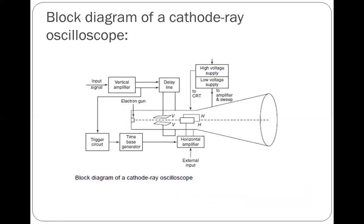CRT generates the electron beam, accelerates the beam to a high velocity, deflects the beam to create the image, and contains a phosphor screen where the electron beam eventually becomes visible. It displays the quantity being measured.